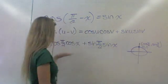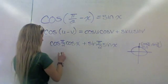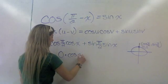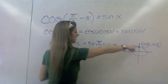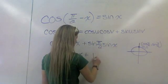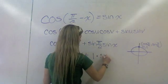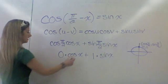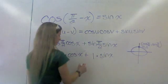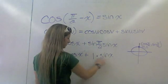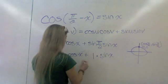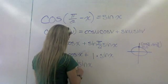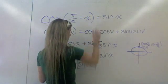So we're going to plug that in. Cosine of pi over 2 is 0, so 0 times cosine of x, plus sine of pi over 2 is 1, times sine of x. Clearly 0 times anything is 0, so that term goes away. And we're left with 1 times sine of x, which is just sine x. So it equals sine x, which is what we were trying to prove.